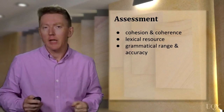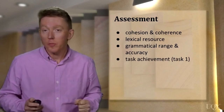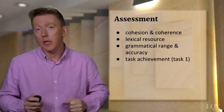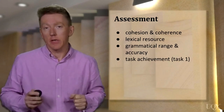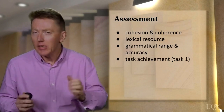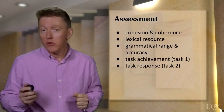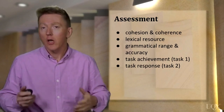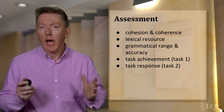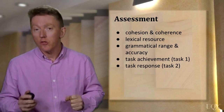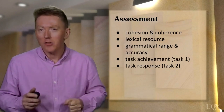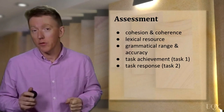The tasks are marked slightly differently. Task 1 is a description of a visual, so you'll be marked on task achievement — how appropriately, accurately, and relevantly you complete the task using at least 150 words. In task 2, on the other hand, you need to write an academic essay, so you'll be marked on your task response. The examiner will be looking to see how well you can make and develop your position or argument, and how you support it with evidence and examples, using at least 250 words.